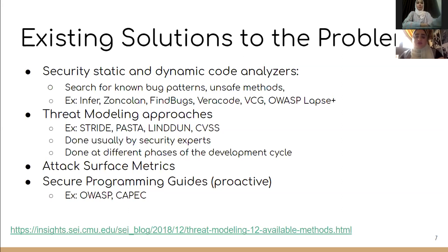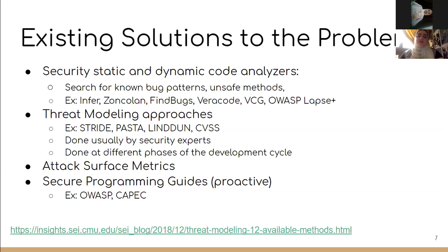The second approach is also called the security professional approach and can be done at any phase of the development cycle. The third approach is attack surface metrics — an attack surface is the sum of different points where an attacker can try to enter or extract data from an environment, and best security practice is to keep it as small as possible. The fourth approach is the developer following a secure programming technique or guide such as OWASP.